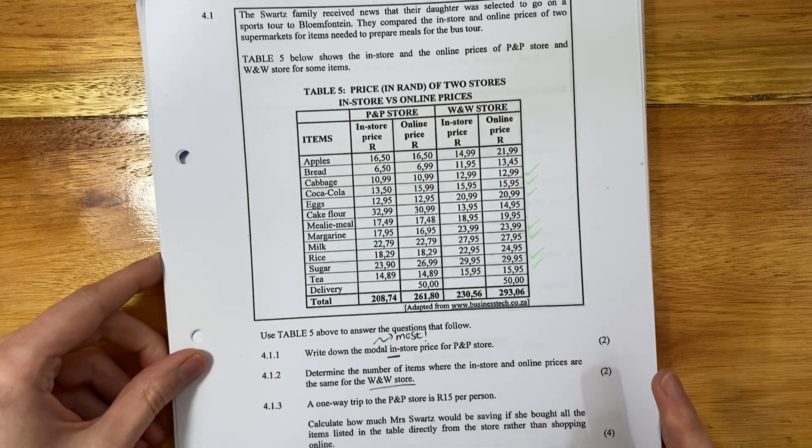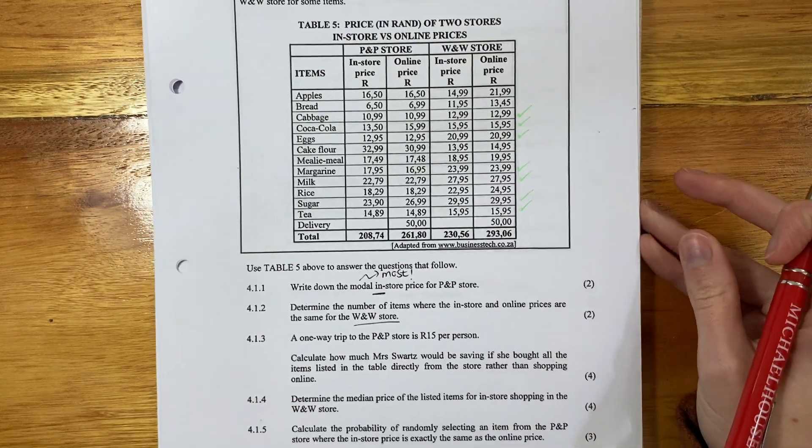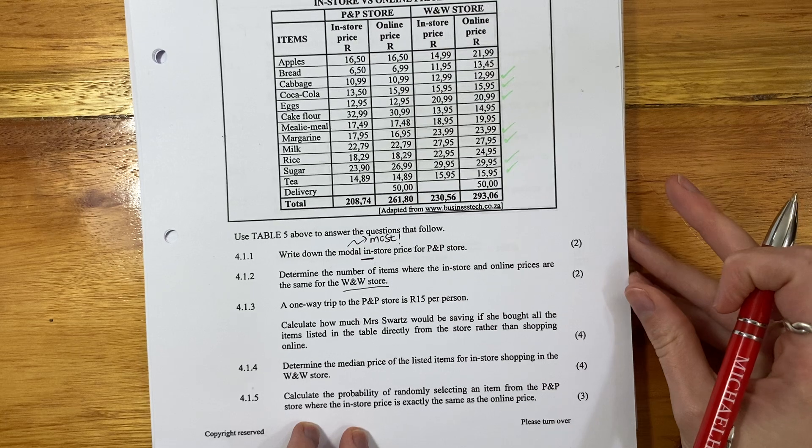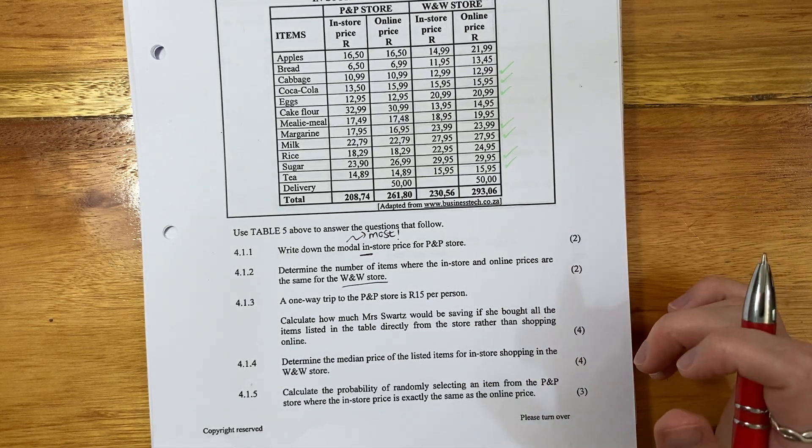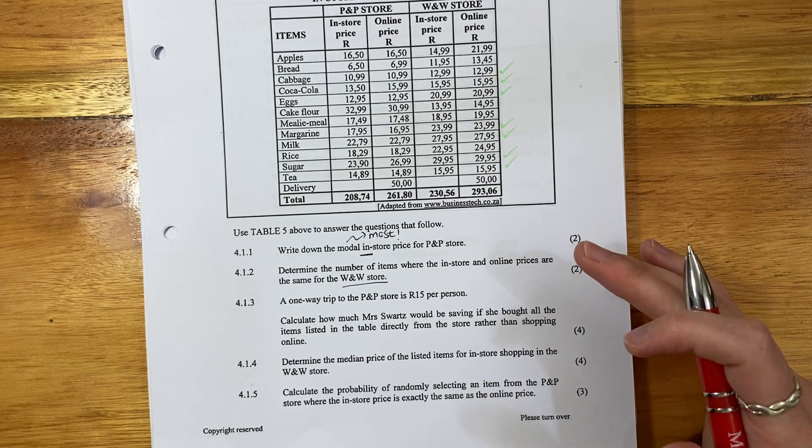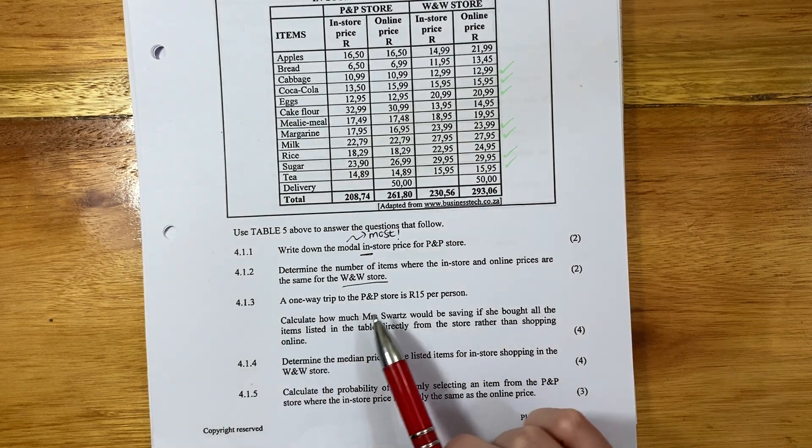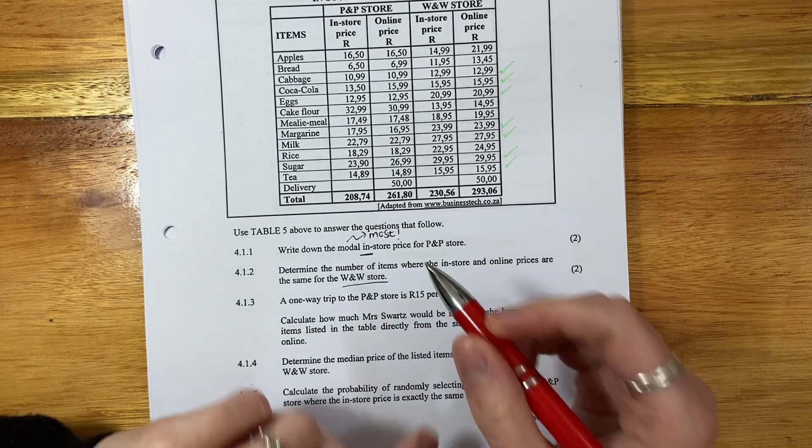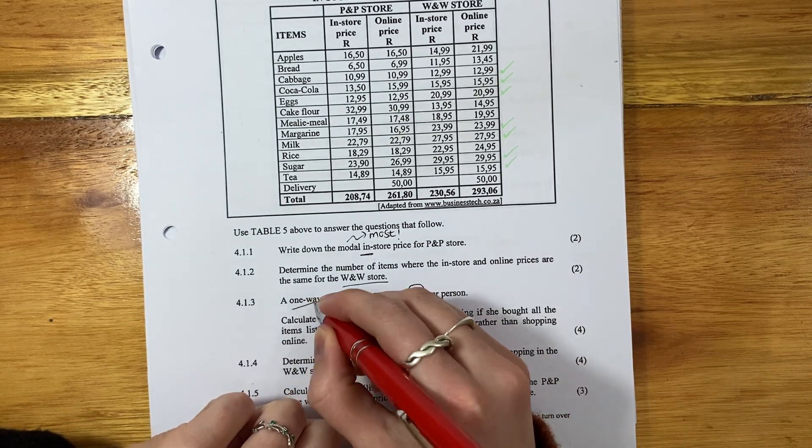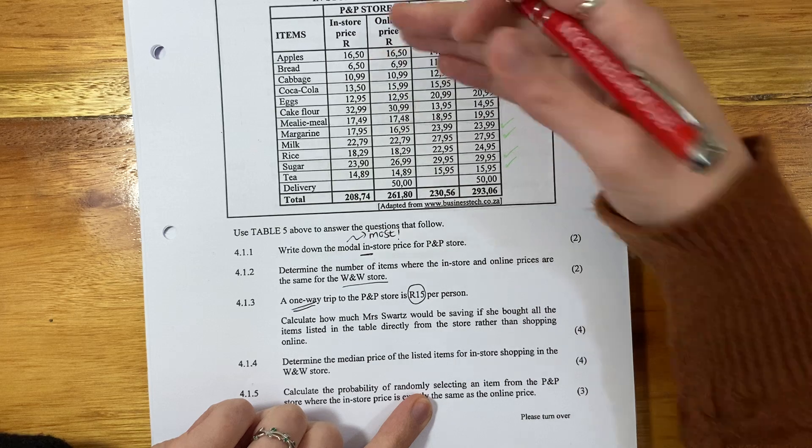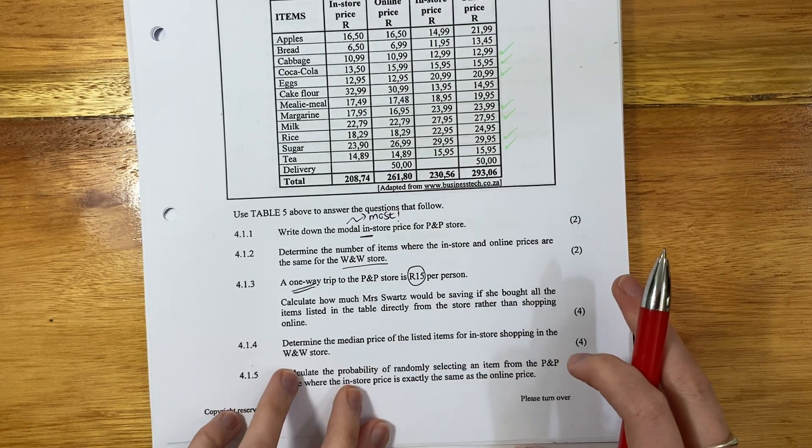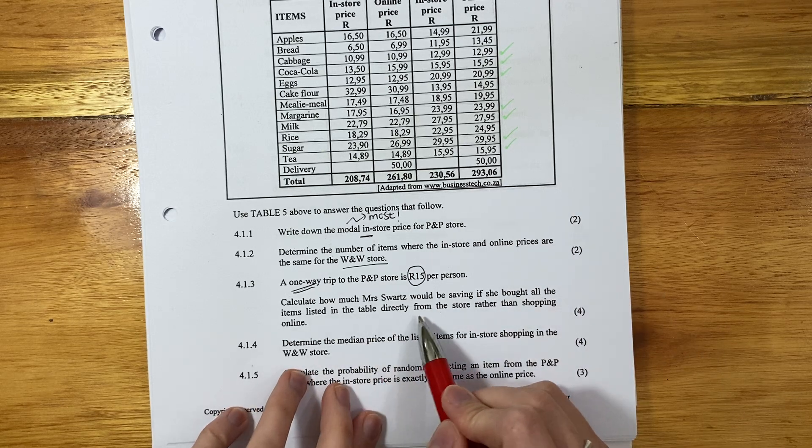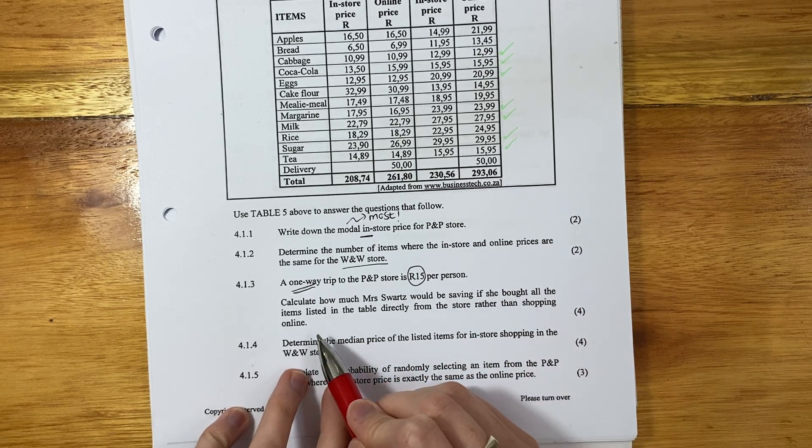We don't have to show any working out, so don't waste time there. Literally just state seven. These ones have a few more marks, so we're probably going to have to do a bit more on the working out side. A one-way trip to the P&P store is 15 Rand per person. So that's one way, 15 Rand there, 15 Rand back. Calculate how much Mrs. Watts would be saving if she bought all the items listed in the table directly from the store rather than shopping online.